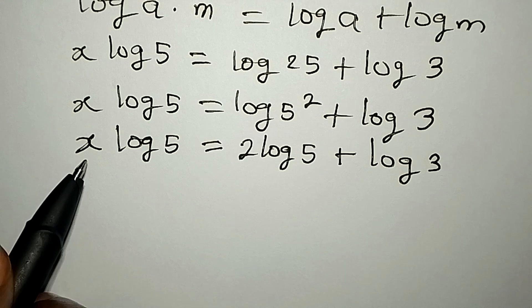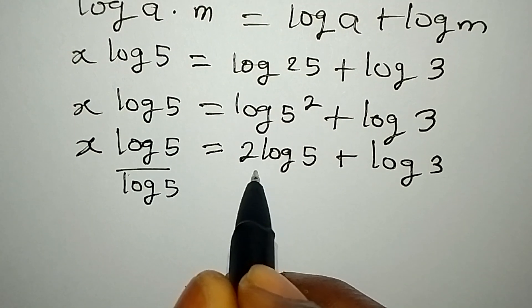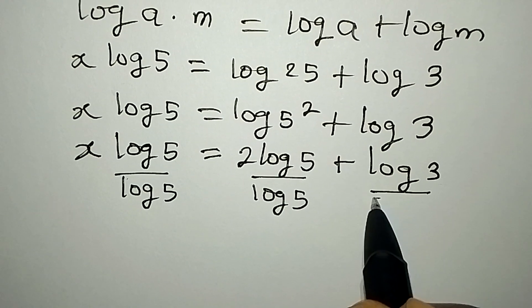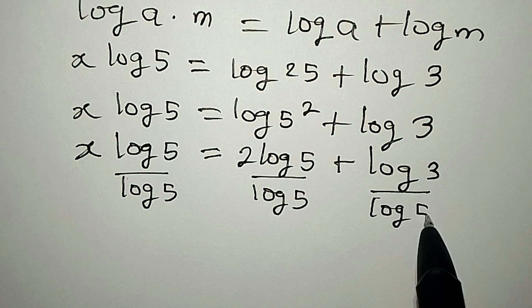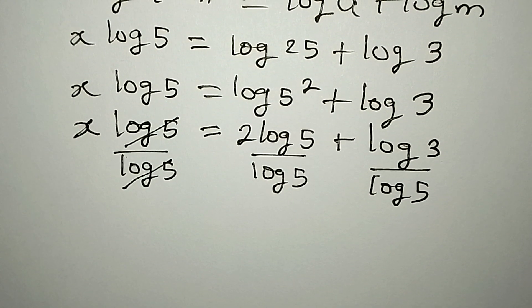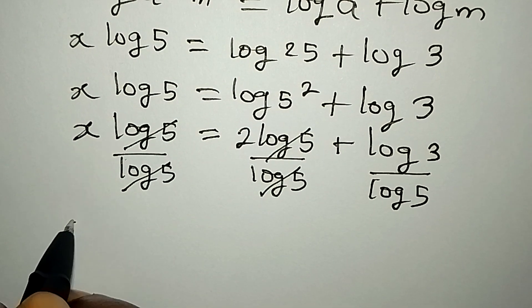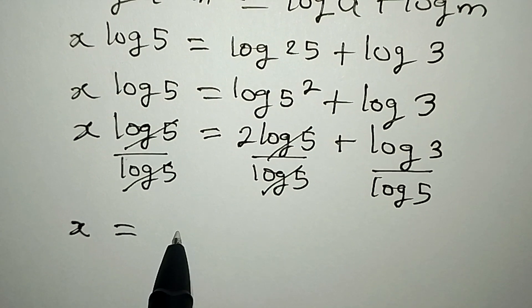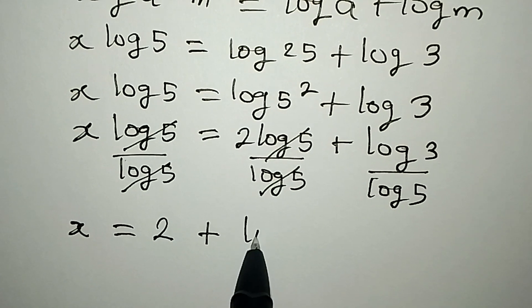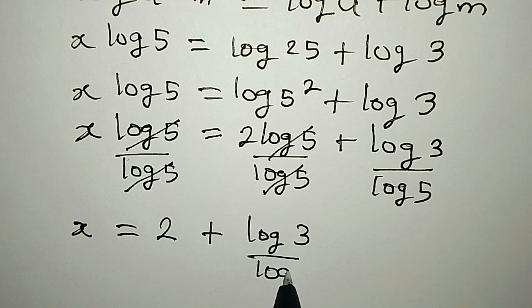Now to get the value of x, divide all terms by log 5. Divide this side by log 5 and divide that side by log 5. The log 5 terms cancel, and we are left with x equals 2 plus log 3 over log 5.